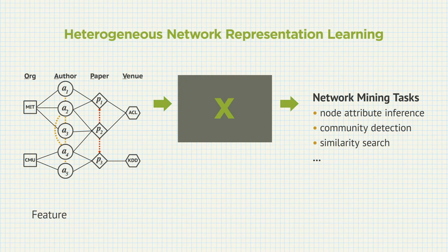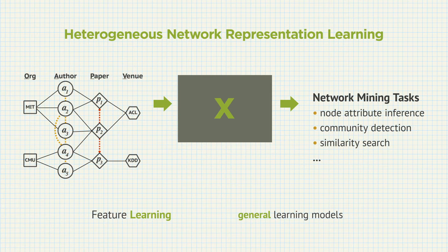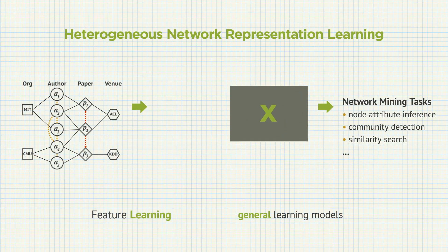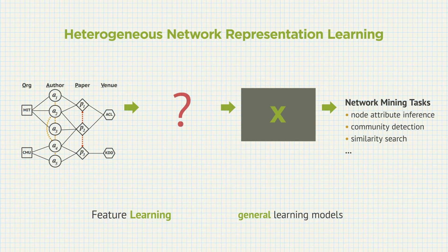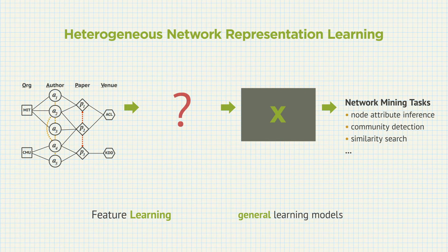Inspired by recent advances in word embedding, natural language processing, and homogeneous network embedding, we define the problem of feature learning in heterogeneous networks. Formally, the input is a heterogeneous information network, and the output is a latent feature vector learned for each node. The goal is to allow the learned feature vectors to automatically capture internal relations from rich, complex, abstract heterogeneous network systems. With the learned latent features, we can apply general data mining methods for the heterogeneous network mining tasks described earlier.